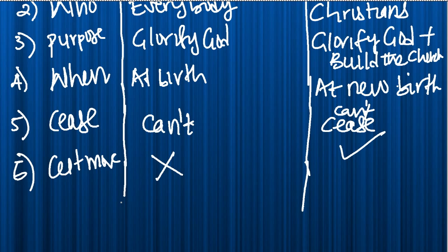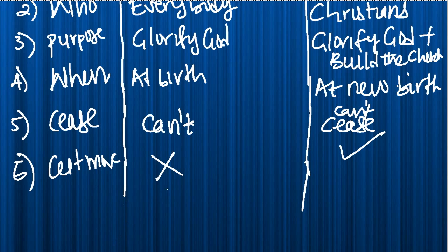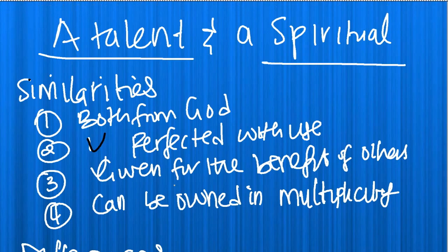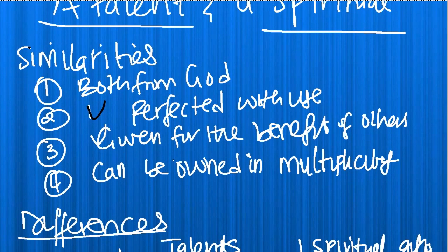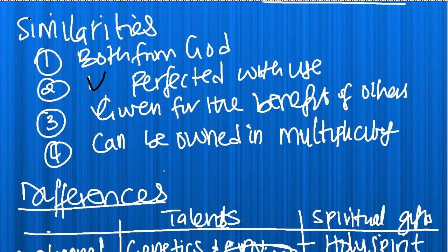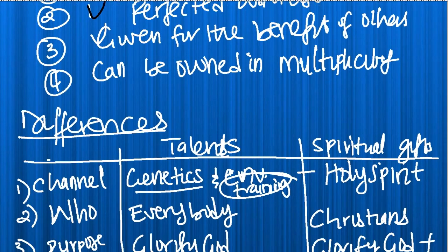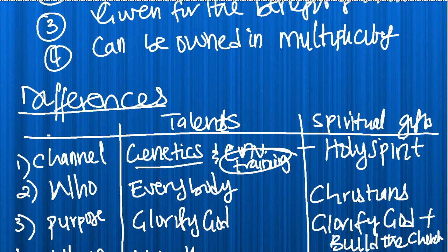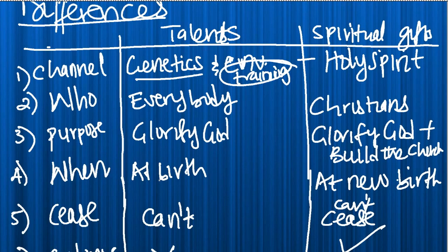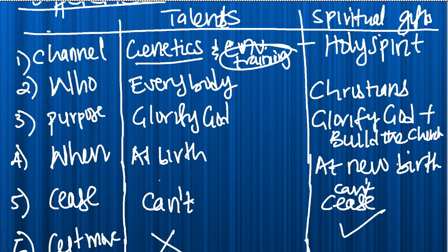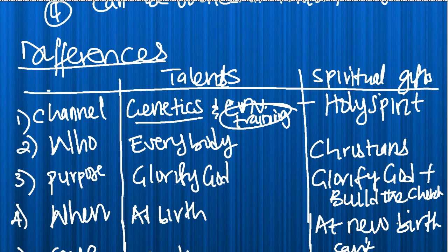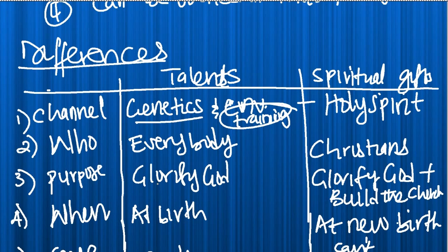Again, remember that all of them are God's graces that God gives to us. And that there are many similarities. And some of the similarities are that both are from God. Both are perfected with you. Both are given for the benefit of others. And you can own more than one of them. And the difference is that genetic talents are received at birth. They come in your genes. And training improves them.